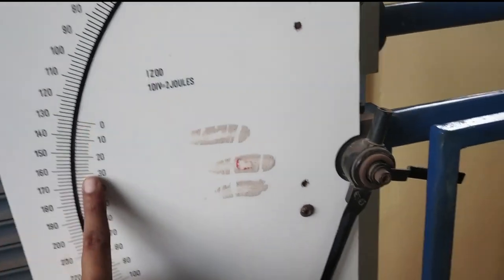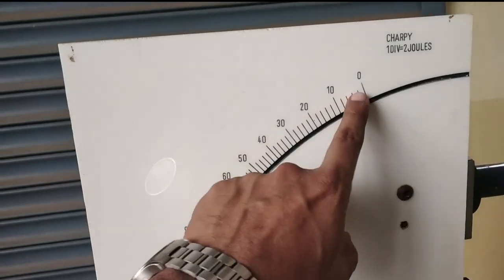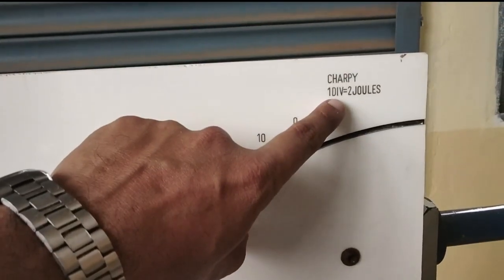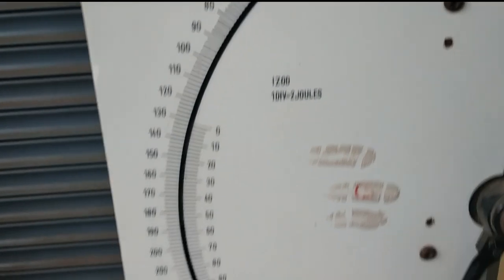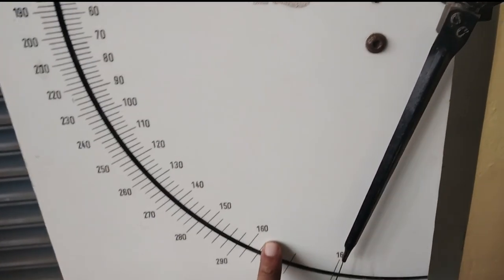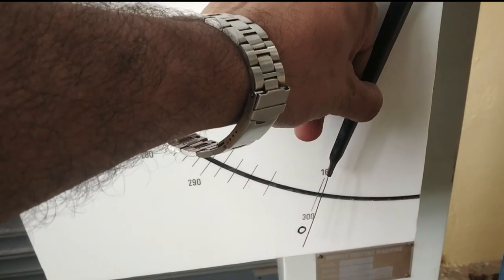Next, you have to see this inner scale in case of IZOD test. In case of Charpy, you have to see the outer scale. One division contains 2 joules. It is written here. The maximum energy absorbed for the IZOD test will be 168.